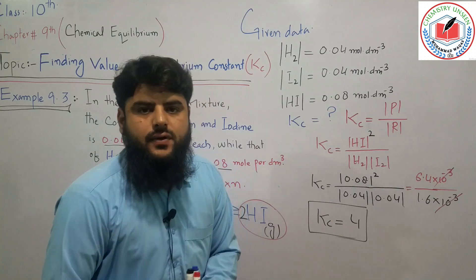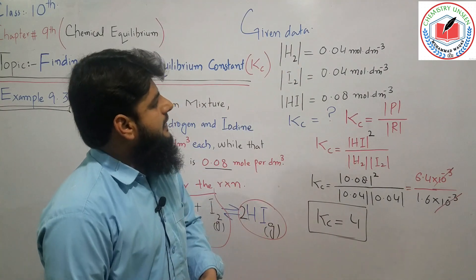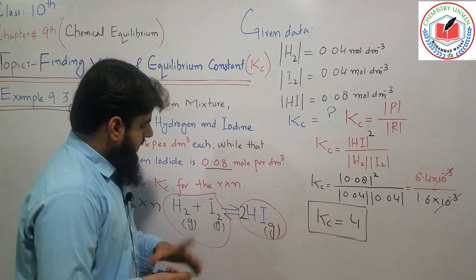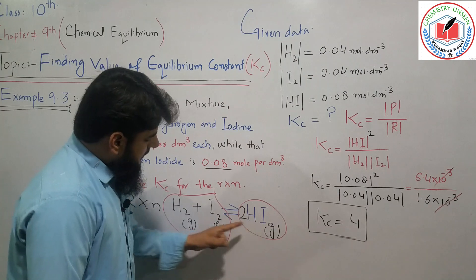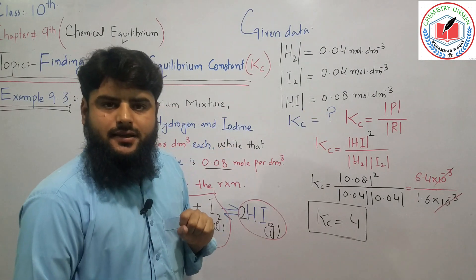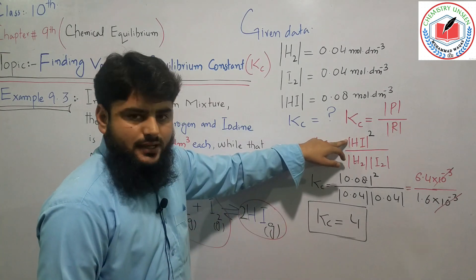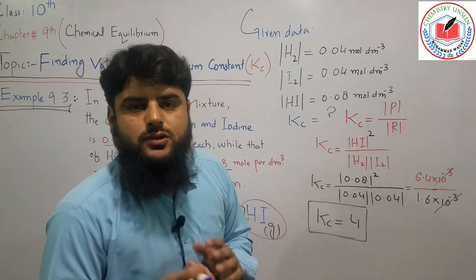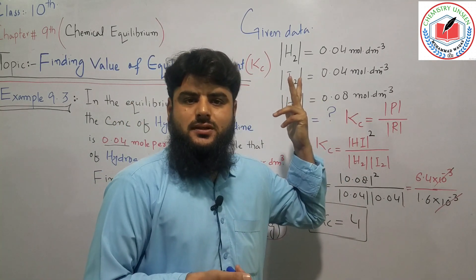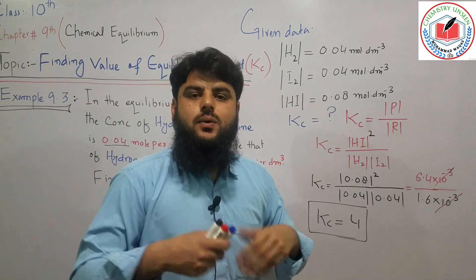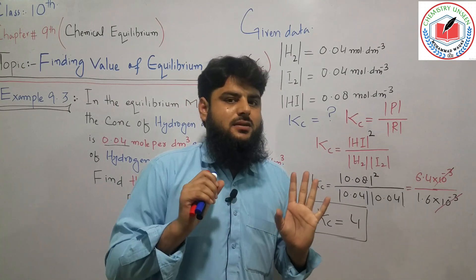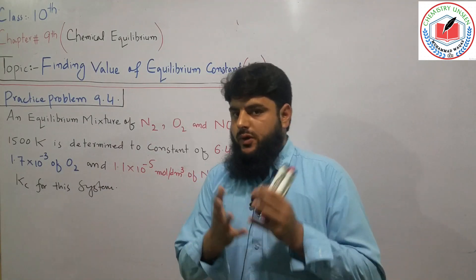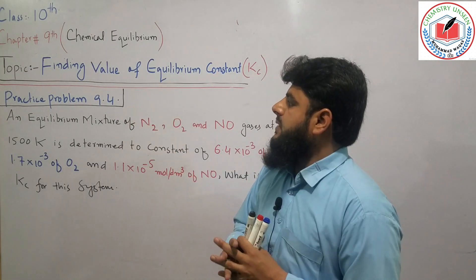We have to arrange this equation. We use square bracket notation to express molar concentration of a gas. The square bracket represents concentration. For gases in the reaction and product, we express concentration in mol/dm³. This brings us to practice problem 9.4 from the paper. There is an equilibrium mixture of nitrogen, oxygen, and nitric oxide gases.